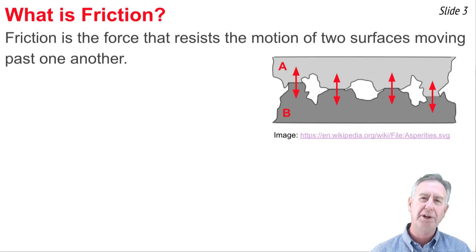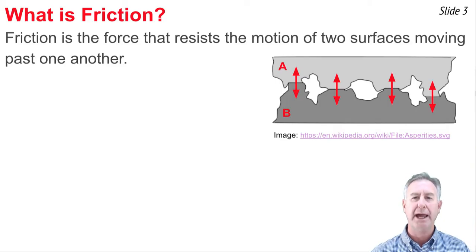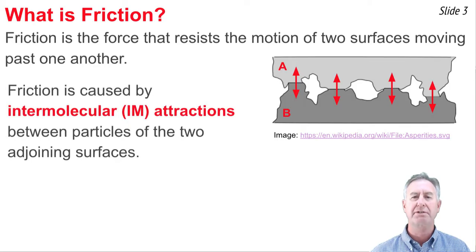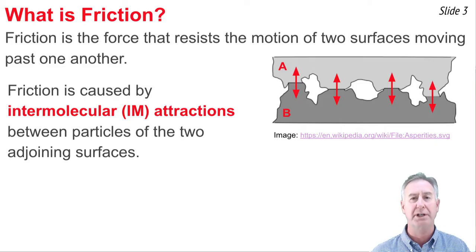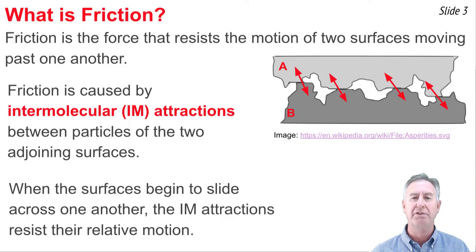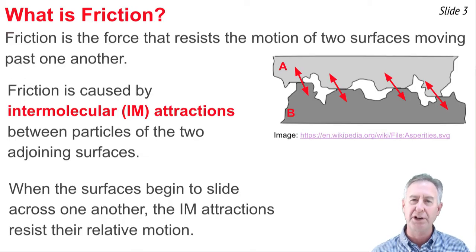Friction is the force that resists the motion of two surfaces that are moving past one another. The cause of this friction is the interparticle attractions between the particles of material A and the particles of material B. They tend to weld the two surfaces together so that they can't move past one another. When one surface tries to slide past the other, those interparticle attractions pull the two surfaces back towards one another, and this resistance force is what we call friction.